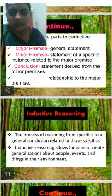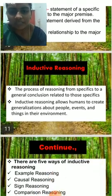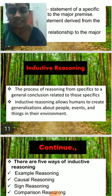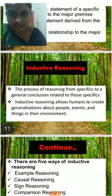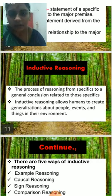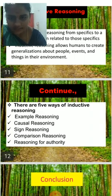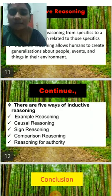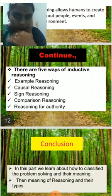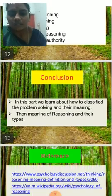The next type is inductive reasoning — the process of reasoning from specific to a general conclusion. In inductive reasoning, humans create generalizations about people, events, and things in the environment. There are five ways of inductive reasoning: example, causal, sign, comparison, and reasoning from authority.